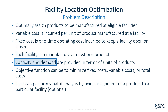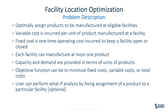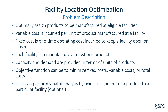The capacity for each facility and the demand for each product are provided in terms of units. The objective function can be to minimize fixed cost, variable costs, or the total cost which is the sum of fixed and variable costs — and this is something the user is able to select themselves. The user is also able to perform a what-if analysis by fixing the assignment of a product to a particular facility, and this is optional.